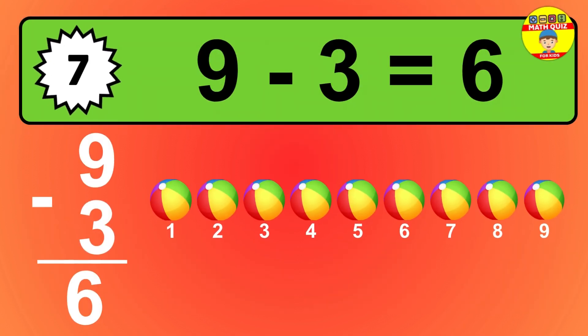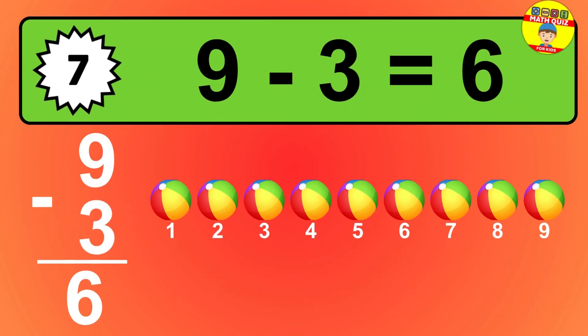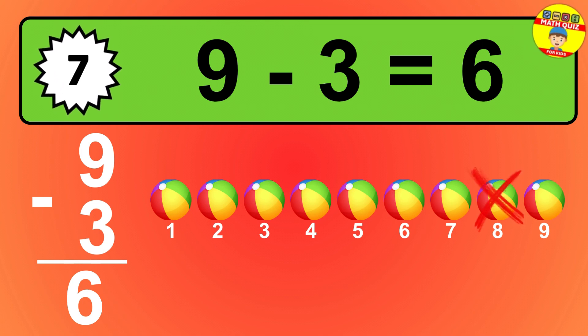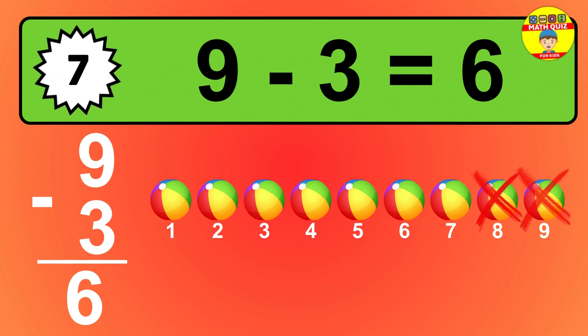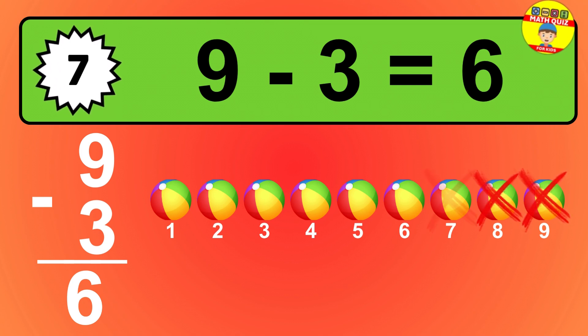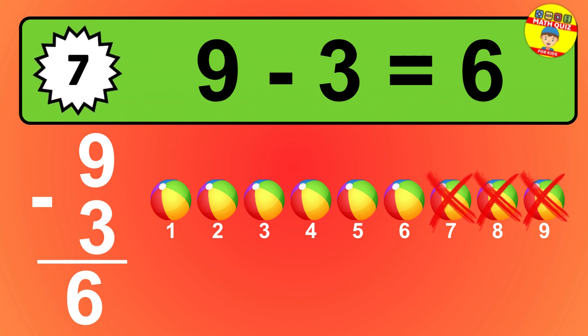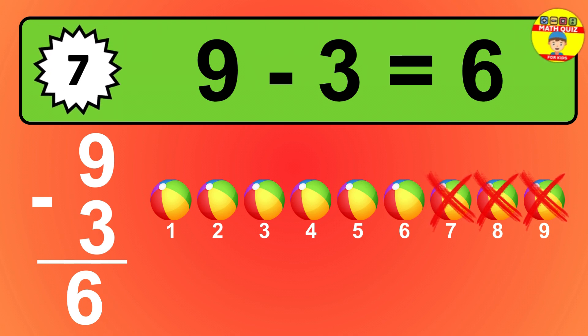Question 7. 9 minus 3 equals what? So the answer is 9 minus 3 is 6. Let's count it. 1, 2, 3, 4, 5, 6.